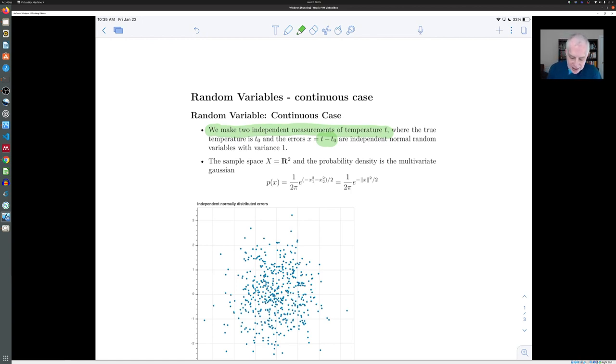And for simplicity, in this case, I'm going to assume that the variance of that normal distribution is one. The sigma parameter is one.